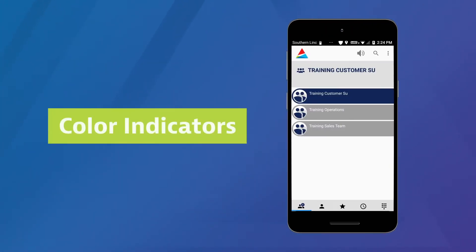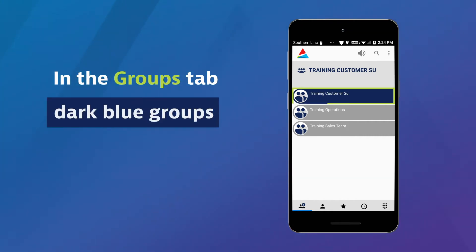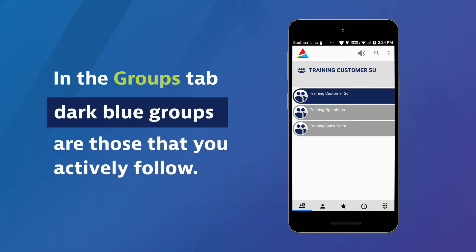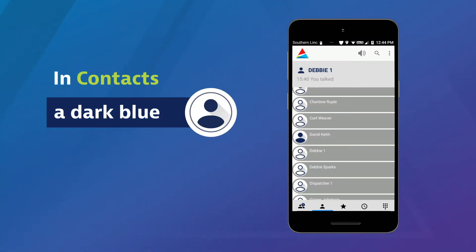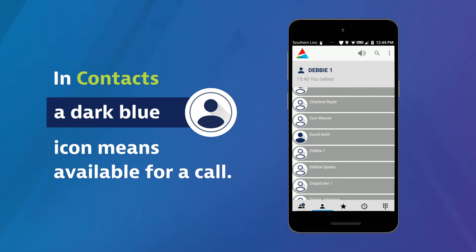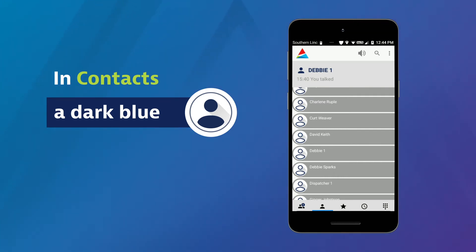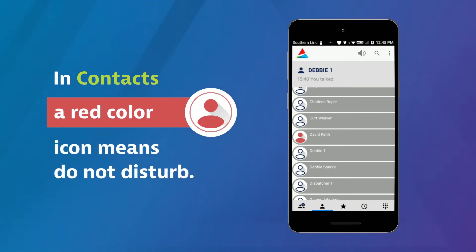Take note of color indicators. In the Groups tab, dark blue groups are those that you actively follow. In Contacts, a dark blue icon means the individual is available for a call. No color means unavailable, while red means do not disturb.